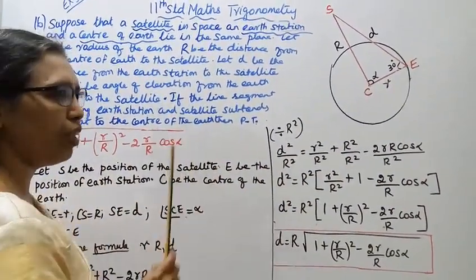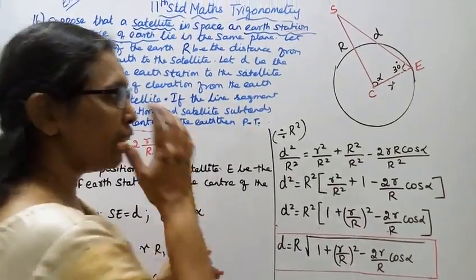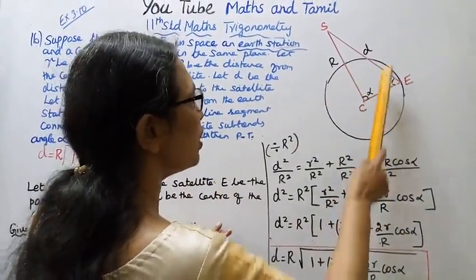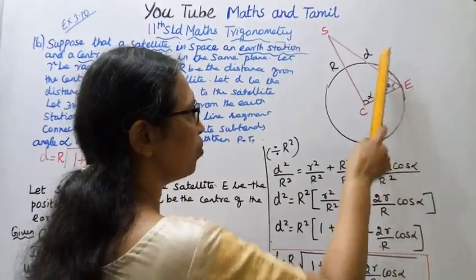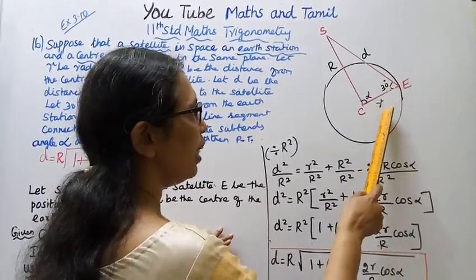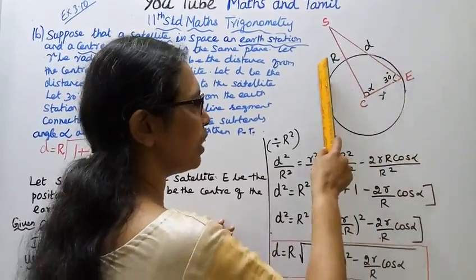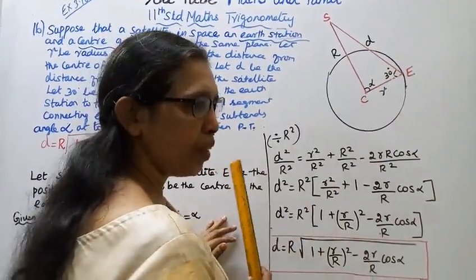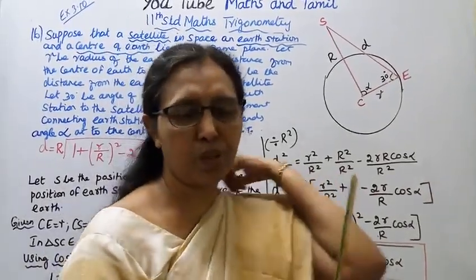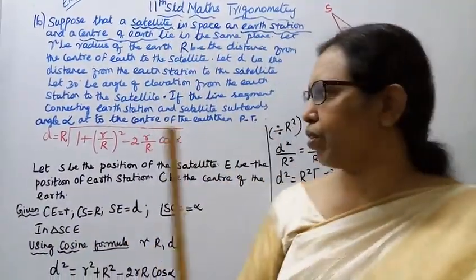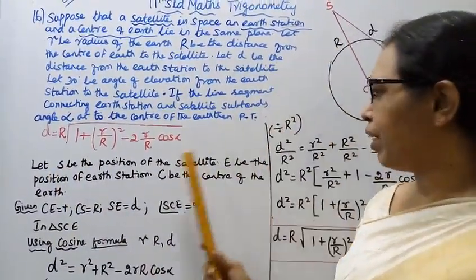Now we will prove this. We know the three sides of the triangle, so we will use the cosine formula. Let us suppose vertices A, B, C for the triangle. The cosine formula will be used for this proof.